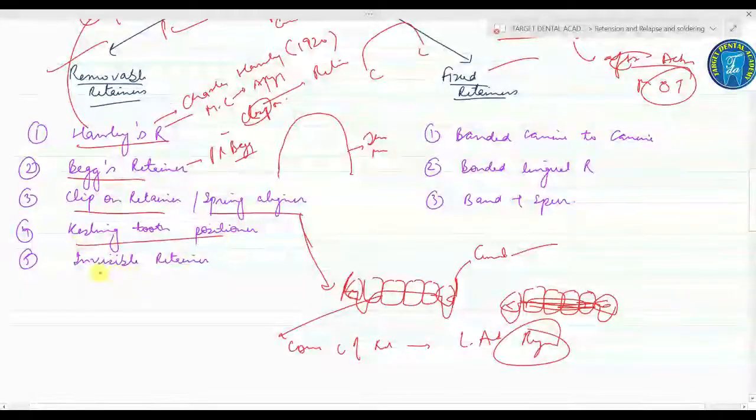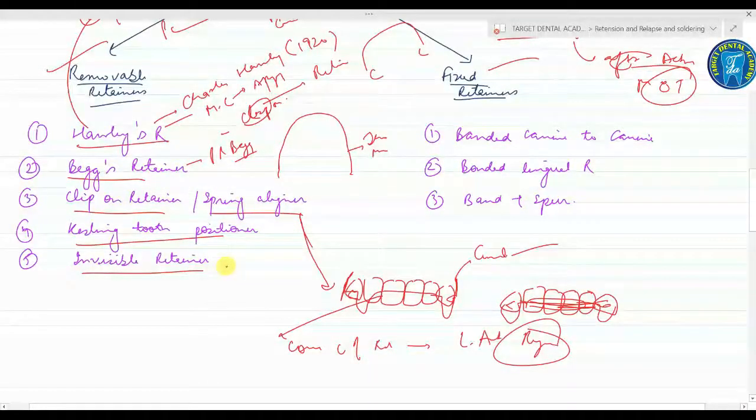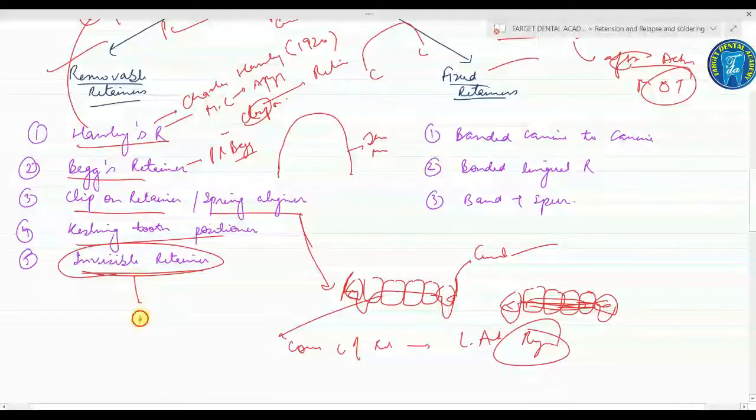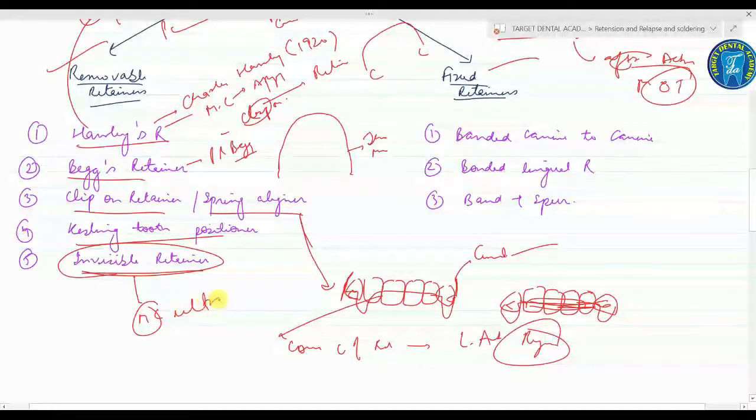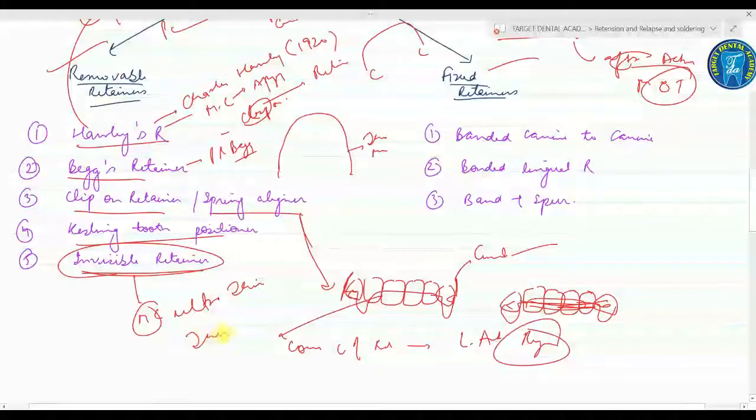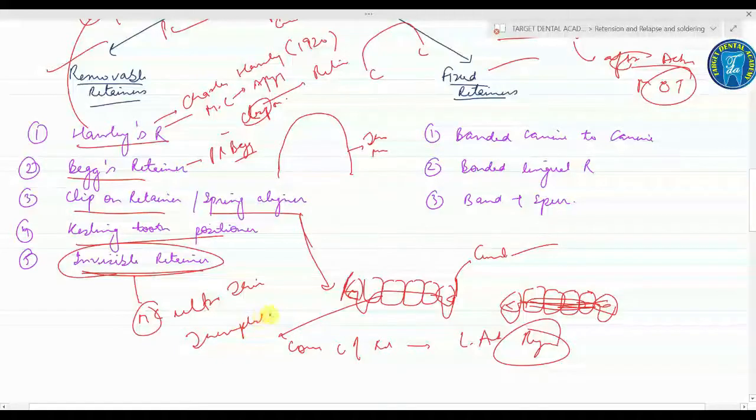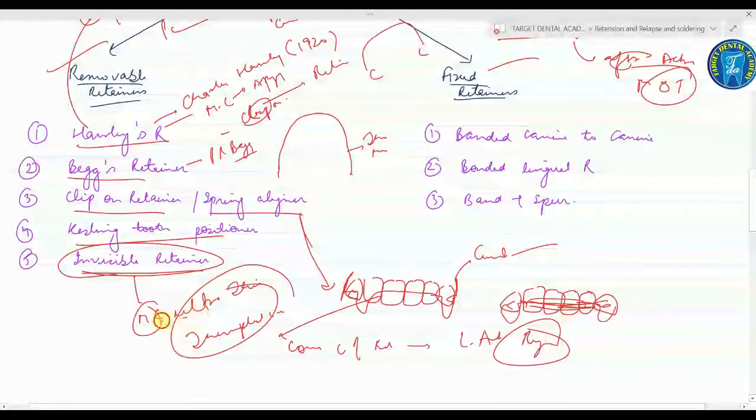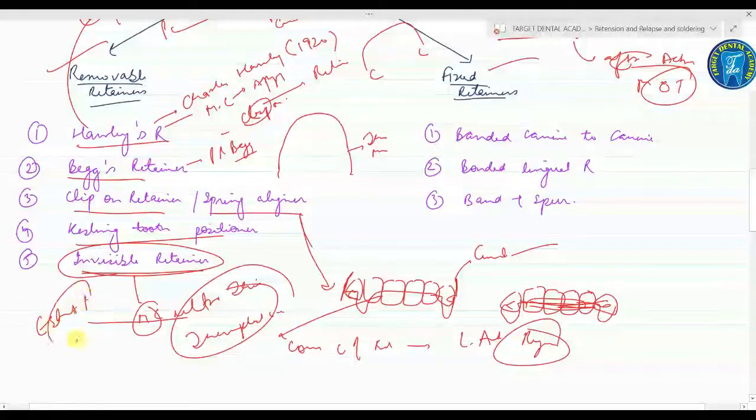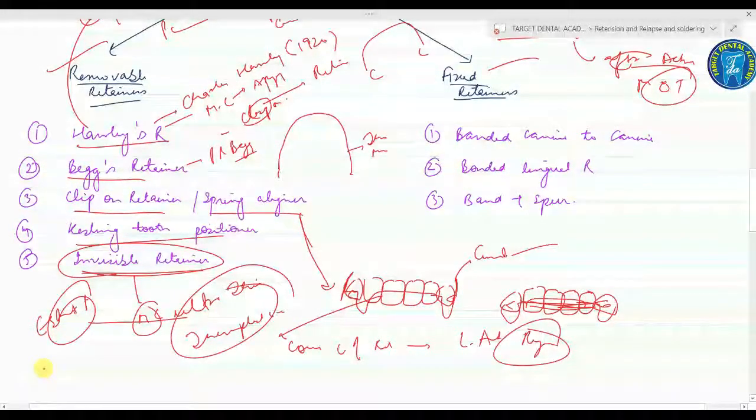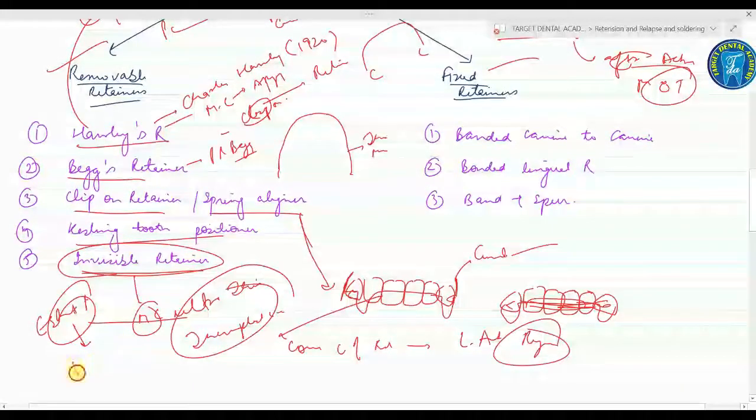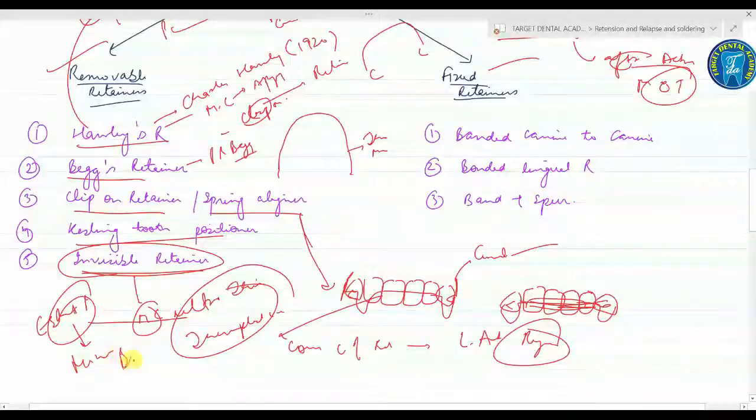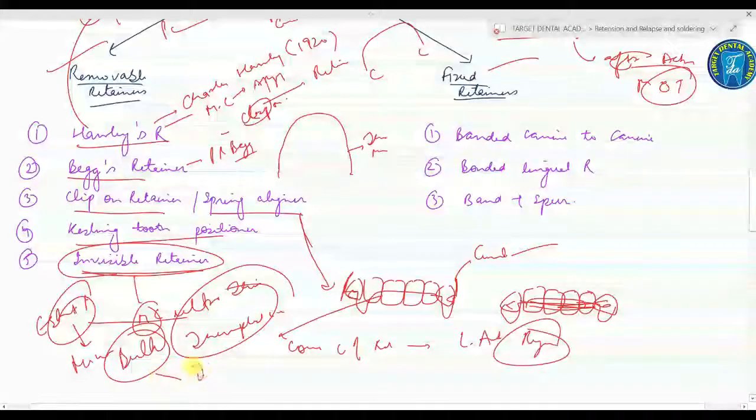Next is the Castling tooth positioner, and last is the invisible retainers. The invisible retainers are most commonly used nowadays after the Holly's retainer. It is made up of an ultra-thin thermoplastic sheet. It is aesthetically pleasing and other advantages include minimal bulk and it is quick to fabricate.